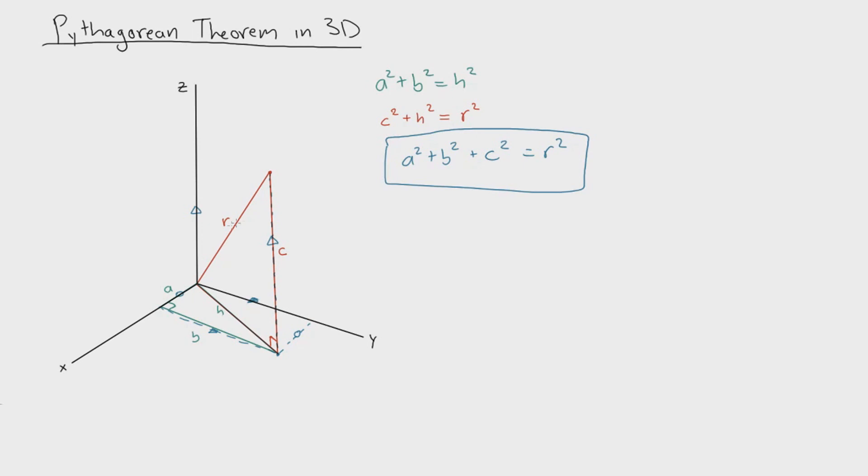If you want to find that given length r, which is the distance from the origin to some point in space, we could say that's simply the square root of a squared plus b squared plus c squared.